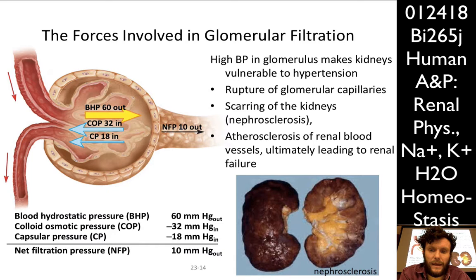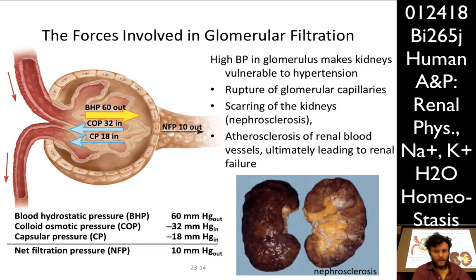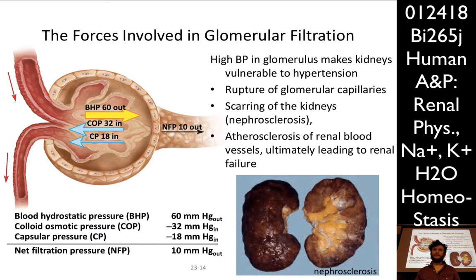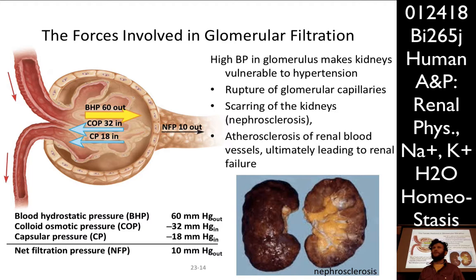Nephrosclerosis can start an inflammatory cascade that can lead to atherosclerosis of the renal vasculature. If that happens, you go into kidney failure. So you can understand why the kidneys are not only important in regulating blood pressure in terms of their unique relationship with blood volume and the ability to remove different solutes and fluid from the body, but the kidneys are also uniquely prone to abnormalities in blood pressure.